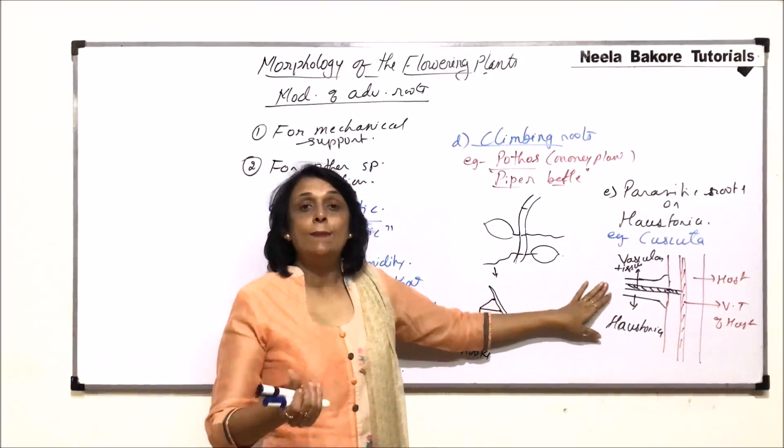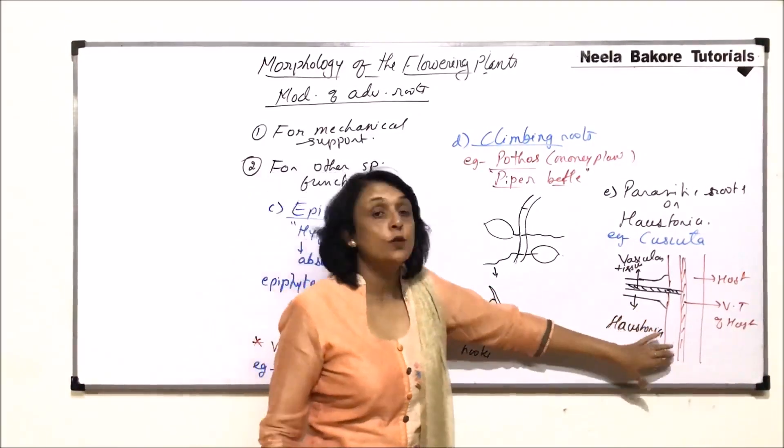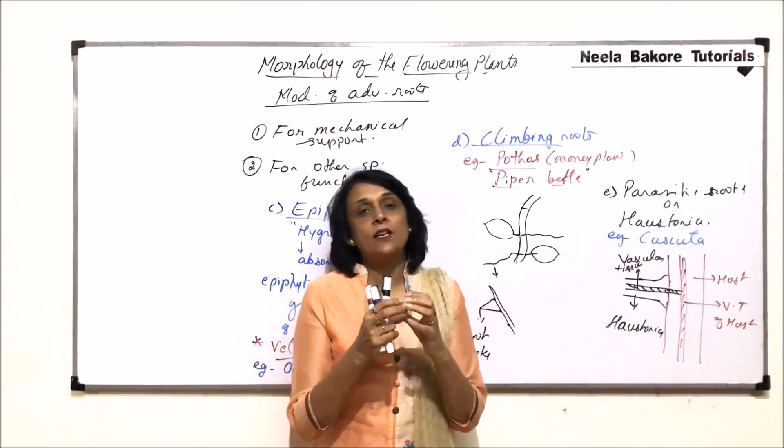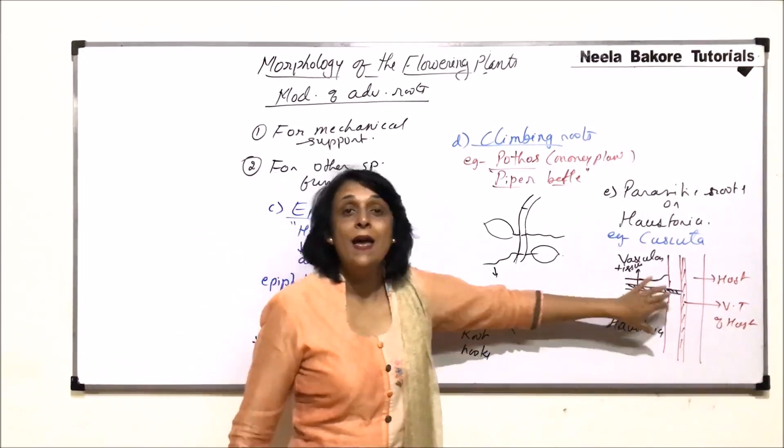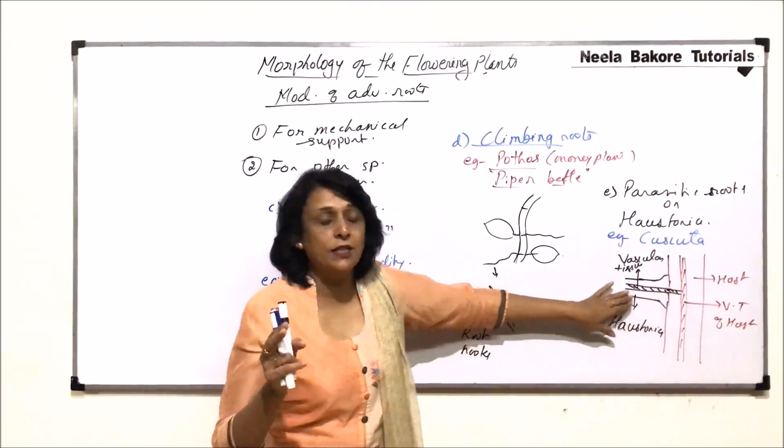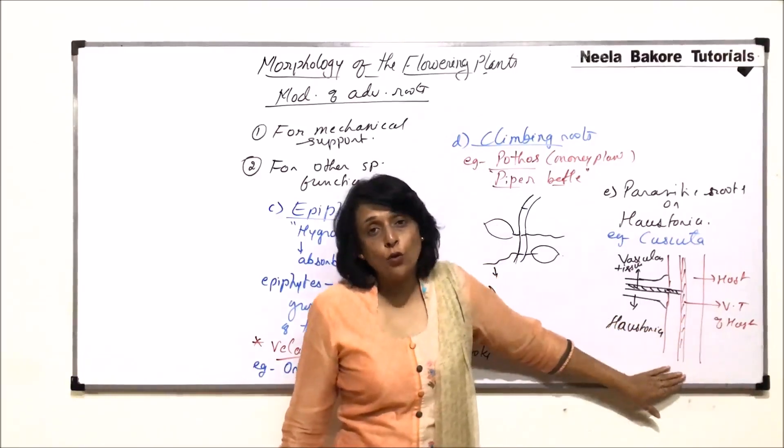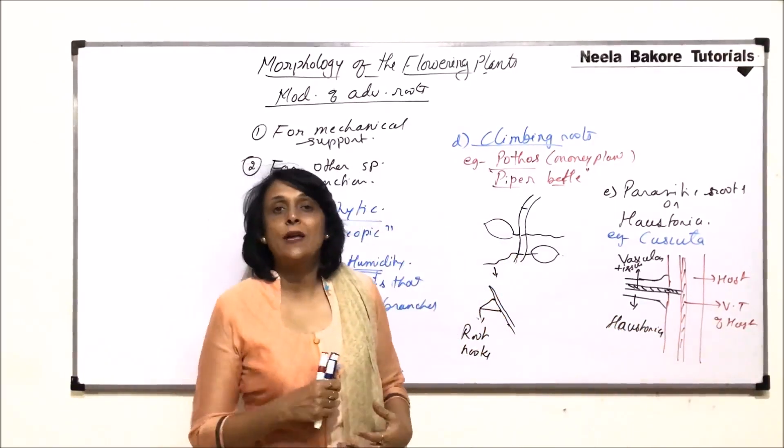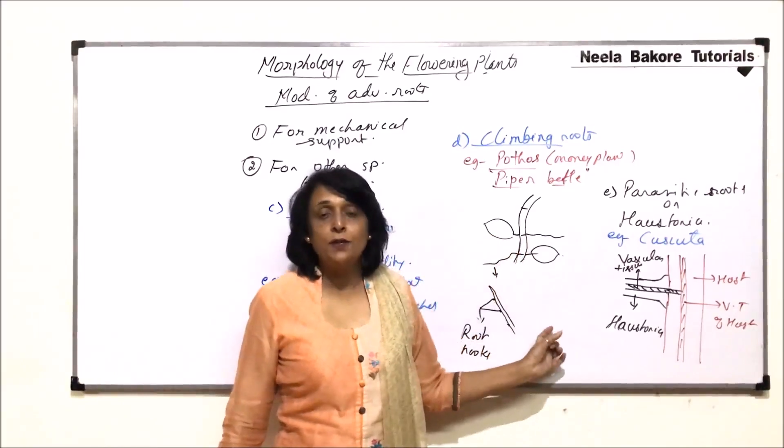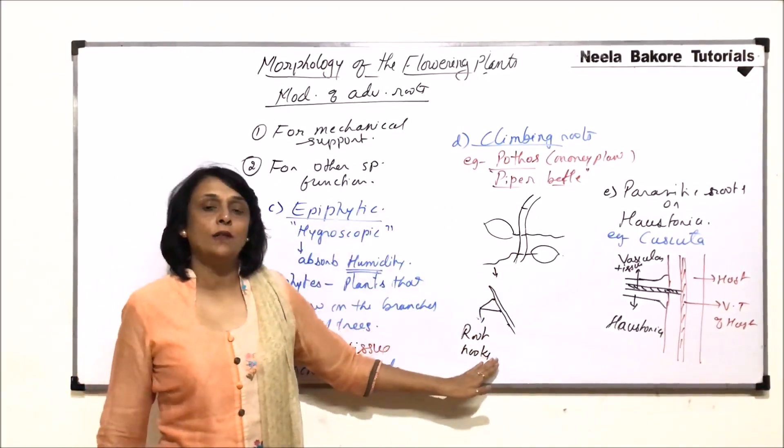So, xylem of cuscuta absorbs or takes water from the xylem of host plant and phloem of cuscuta takes food directly from the host phloem. That means, there is a direct connection between the connective tissue of the host plant. So, that the food and water can be directly taken from xylem and phloem. So, these modifications are of adventitious roots. And, because they are performing some unique functions, we have given them all these names.